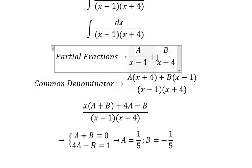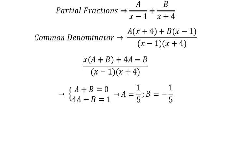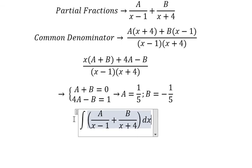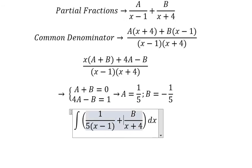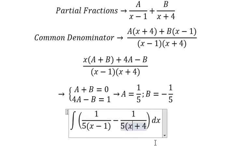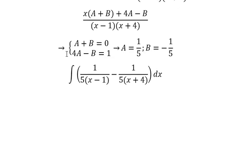So we put this in here. A is 1 over 5, B is negative 1 over 5. And now we got the final answer.